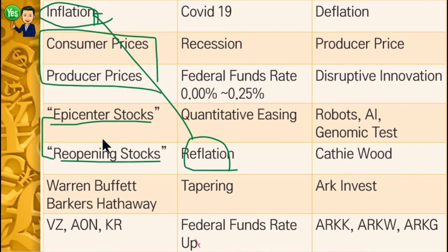For example, Warren Buffett running Berkshire Hathaway — after the first quarter, he released his 13F filing showing what stocks he added to the Berkshire Hathaway portfolio. There were mainly three things.